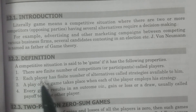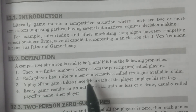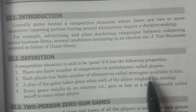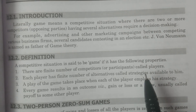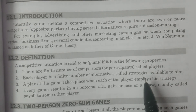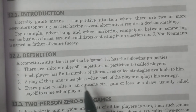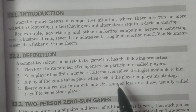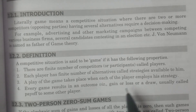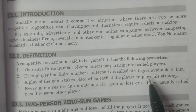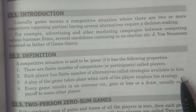First of all, there are a finite number of competitors or participants called players. So there must be a finite number of competitors, which are called players. Second, each player has a finite number of alternatives — each and every player should have a finite number of alternatives, called strategies, available to them.